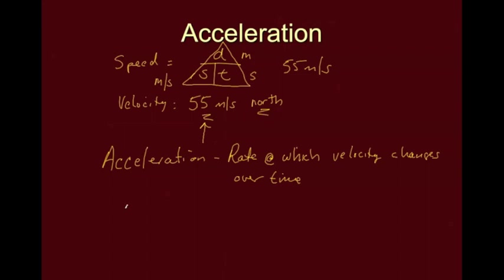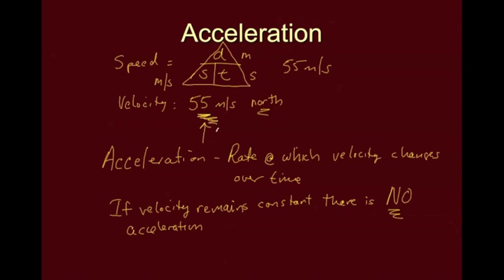So if velocity remains constant, there is no acceleration. So an object moving at a constant speed in a constant direction, so if this object remains at 55 meters per second going north, if it stays that way, there's no acceleration.